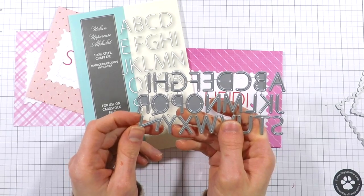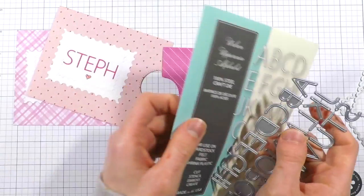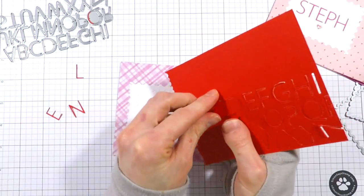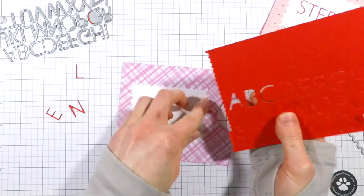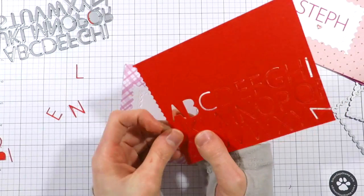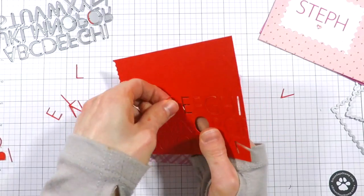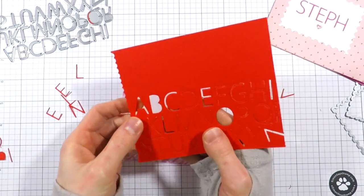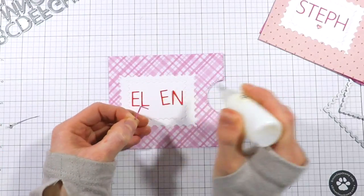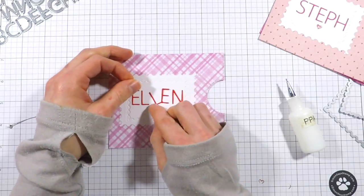I'm going to die cut the Urban Uppercase from some red cardstock, this is Simon Says Stamp lipstick red. In this particular envelope I'm going to be spelling the word Ellen. Ellen is one of my friends, she blogs over at Crafty Ellen H. She's on the Newton's Nook design team and she's really talented.